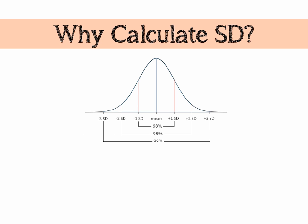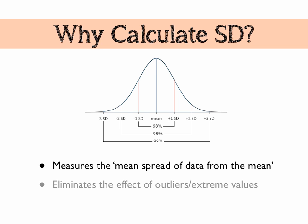So why do we bother to calculate standard deviation? Well, standard deviation by definition is the mean spread of data from the mean. And what it does is it eliminates the effect of any outliers because it's an average spread of data. It calculates the average spread of every single data point and looks at how far it is away from the mean of that data set. And for that reason, it's preferable to the range because the range just looks at the smallest value and the largest value and works out the difference. It doesn't take into account any clustering of data around the mean, which we'll talk about just now.